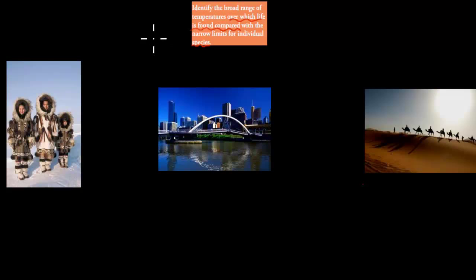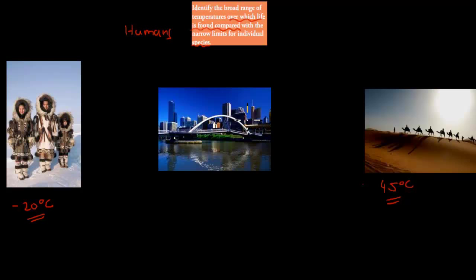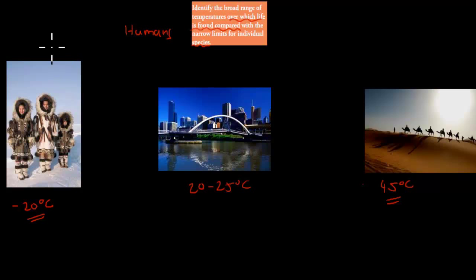For humans it's a bit different — we can find them in different kinds of environments. We have the Eskimos, who can live in temperatures up to minus 20 degrees Celsius. We have the Sahara Desert, which can get really high temperatures such as 45 degrees Celsius — that's quite average for the Sahara. And then Melbourne would be in between, at about 20 to 25 degrees Celsius. So in this case, we find humans over broad ranges of temperatures, but they're all the same species: Homo sapiens.